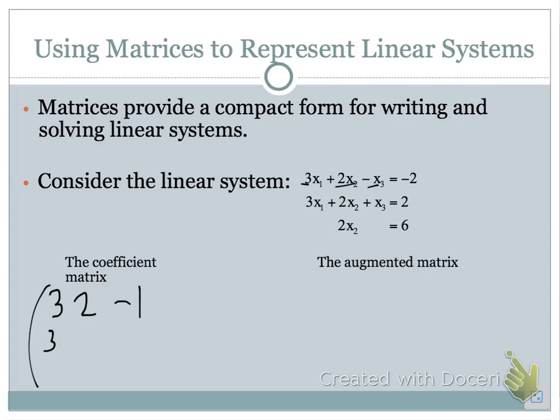The second row would be 3, 2, 1. And then, we notice for our third row, we do not have an x1 term and an x3 term. And actually, in fact we do. We just have the coefficients 0x1, then 2x2, and 0x3. This is our coefficient matrix.